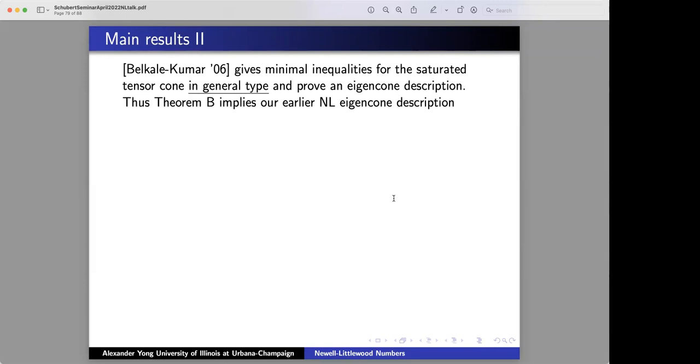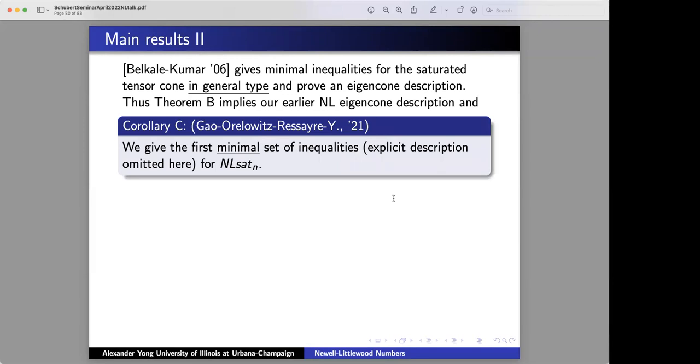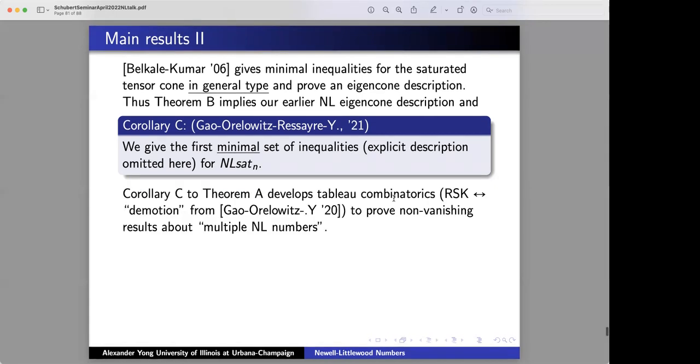Therefore, since we know that NL sat is in fact equal to the saturated tensor cone, we immediately get our eigencone description by just writing out what they mean in that particular case. And we get to choose the symplectic group because, according to Klyachko and Terada, it doesn't matter which group you choose among the classical groups. So we just choose one and go with it. And also, we obtain the first minimal set of inequalities for NL-SAT. Corollary C depends on theorem B, because even though you know that the NL coefficients are tensor product multiplicities in a stable range, when you impose the stable range condition, you may affect, in principle, what the minimal inequalities are in the Belkale-Kumar theorem.